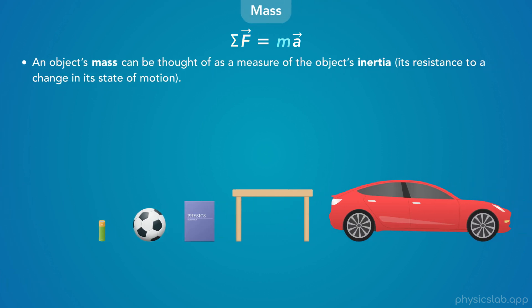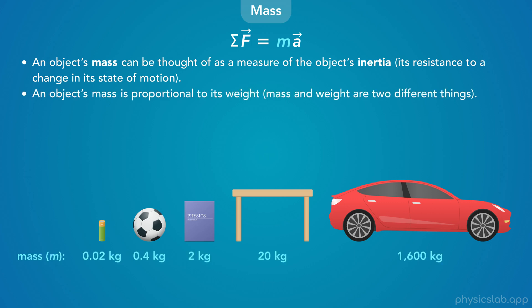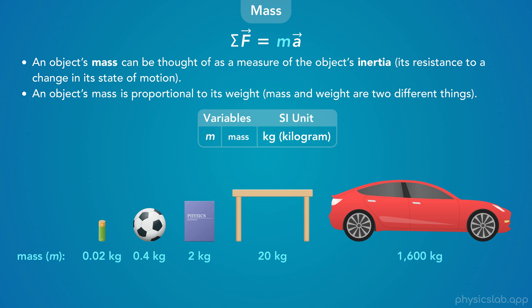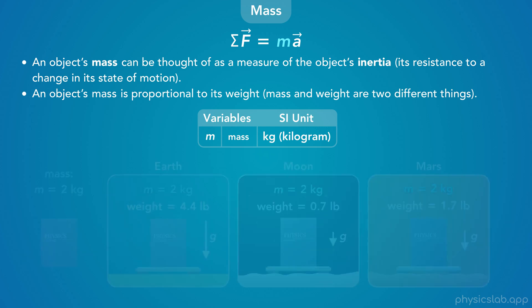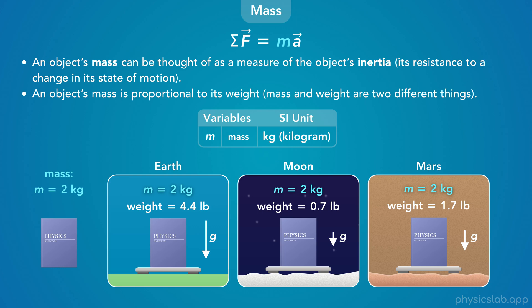An object's mass can be thought of as a measure of the object's inertia, which is its resistance to a change in its state of motion. It might help to think of mass as the weight of an object, since mass is proportional to weight. The SI unit for mass is the kilogram. It's very important to note that mass and weight are two different things: mass is an intrinsic property of an object, and weight is the amount of gravitational force on it. This book always has the same mass of 2 kilograms whether it's on Earth, the Moon, or Mars, but its weight changes depending on the planet's gravity.